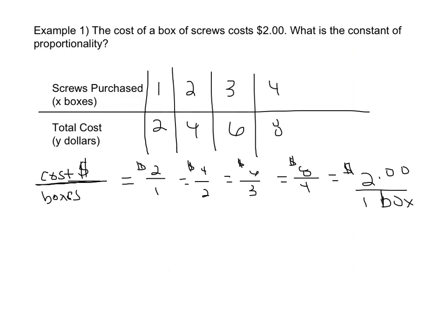In the last video, we showed you the table which related the screws purchased with the total cost, and then we had our equivalent ratios, and because we knew that these were all equivalent, we knew that our relationship was directly proportional.